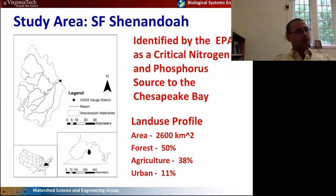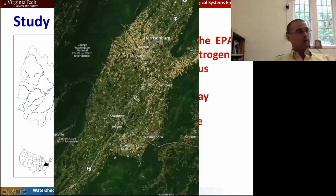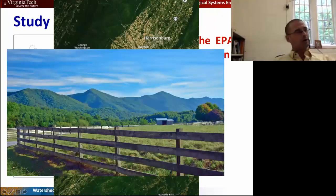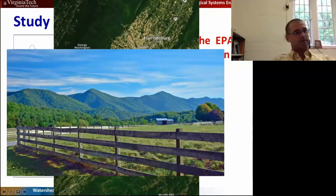It's an interesting watershed. There's not much row crop in it — it's about 40 percent agriculture, mainly pasture, but there's a tremendous amount of poultry and livestock production, so a lot of manure produced in this watershed. We're surrounded by the mountains on both east and west, and this long valley is almost entirely agriculture. It's a really pretty area with a lot of good fishing streams that people want to protect, and there are many NGOs like Friends of the Shenandoah River trying to protect these systems.